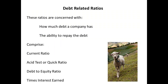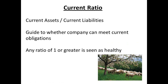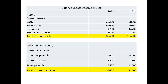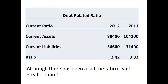The last set are the debt-related ratios. These ratios are concerned with the amount of debt that a company has and the ability of the company to repay that debt. The ratios comprise the current ratio, the acid test or quick ratio, the debt to equity ratio, and the times interest earned ratio. To obtain the current ratio, we divide current assets by current liabilities. This gives an indication of whether the company can meet its current obligations — clearly, the value has to be 1 or higher. All information is obtained from the balance sheets. For 2011, the figure was 3.32, and for 2012 it has fallen to 2.42. However, both are in excess of 1, so the company can meet current liabilities.